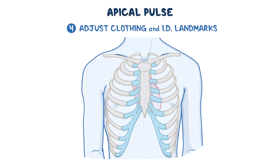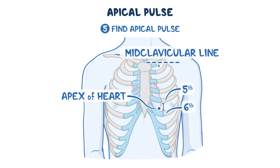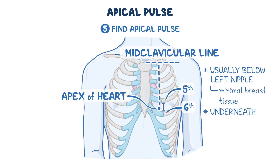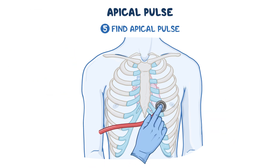After asking for permission, adjust the patient's clothing and use your fingers to identify anatomical landmarks. Find the apical pulse at the apex of the heart on the left side of the chest, between the fifth and sixth ribs — the fifth intercostal space along the midclavicular line. This is typically just below the left nipple in people with minimal breast tissue, or underneath the breast in those with more significant breast tissue. In a young child under three, the location will be higher, around the fourth intercostal space and slightly medial to the midclavicular line.